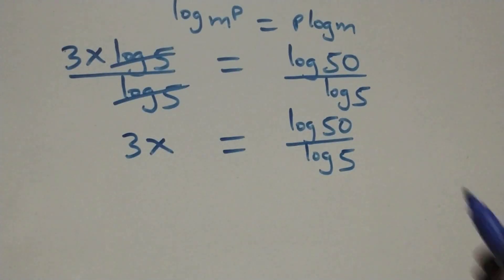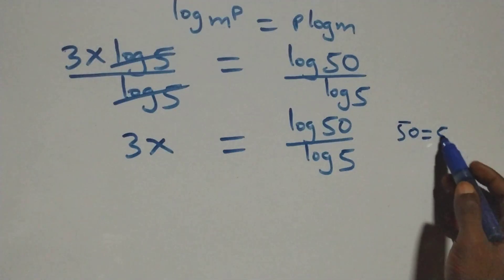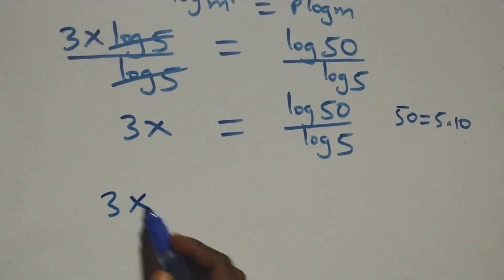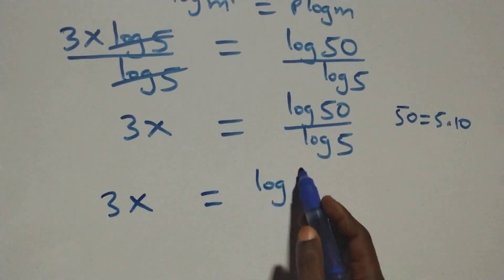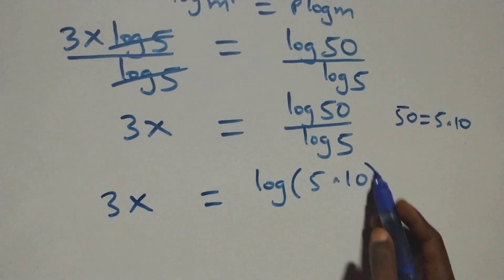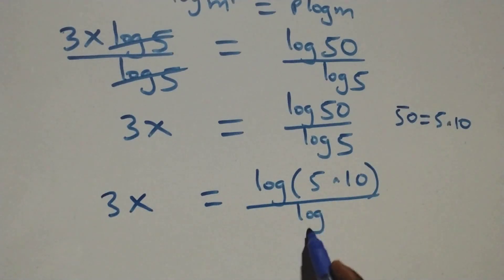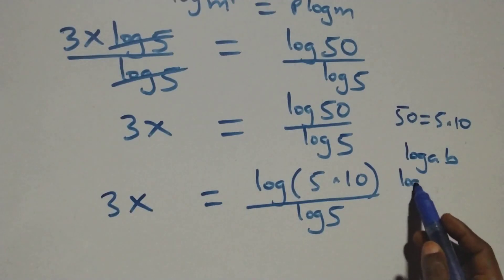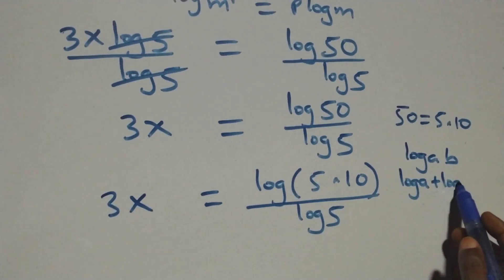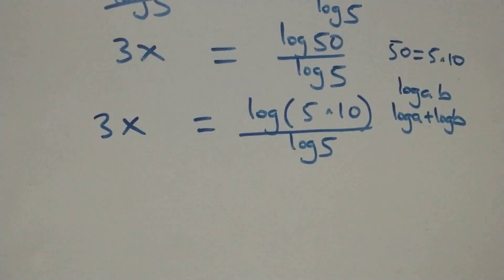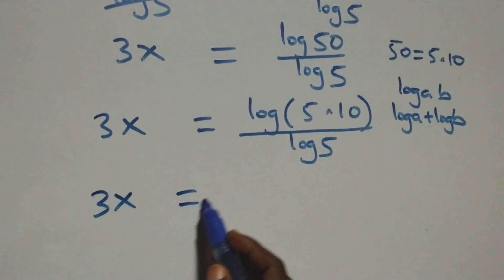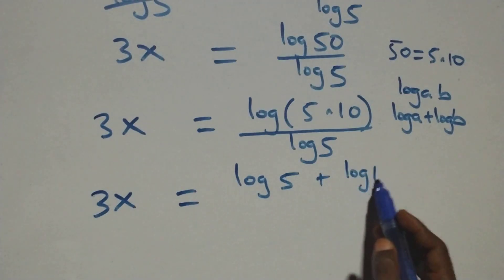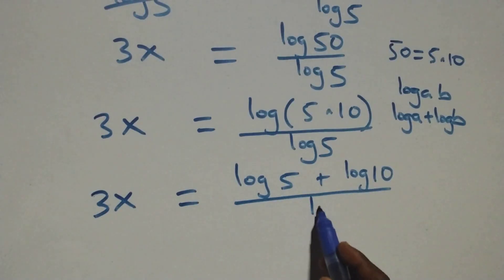From what we have here, we can write 50 as 5 times 10. This gives us 3x equals log of 5 times 10, over log 5. This follows the law of logarithms: log of A times B equals log A plus log B. So we have 3x equals log 5 plus log 10, over log 5.